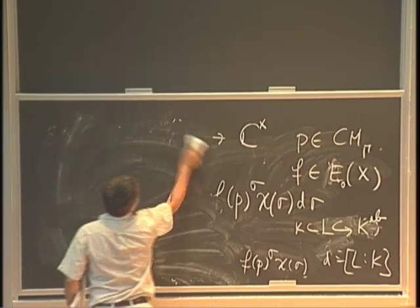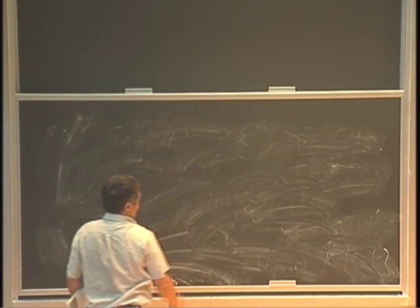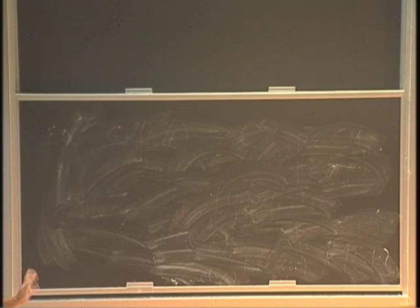At the very beginning, people believed Heegner's work had some gaps. It took until 1968 — about 16 years — before people started to believe what he had done was correct. Sadly, he had already died four years earlier, before he knew his work was recognized by the community.